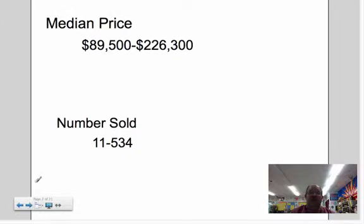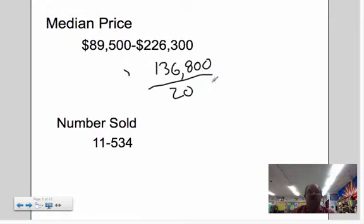A way to represent that information would be to make a graph, and we need to pick an appropriate scale. We'll take the $89,500 and subtract it from the $226,300. That comes up to be $136,800, and I'm going to say let's go with about 20 divisions. $136,800 divided by 20, I end up with about $6,840 for each one. I don't want to make my scale $6,840, so I'm going to round that roughly to $10,000. We're going to count by $10,000 on the median house price.